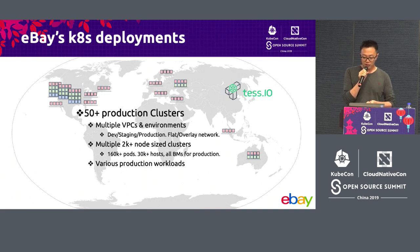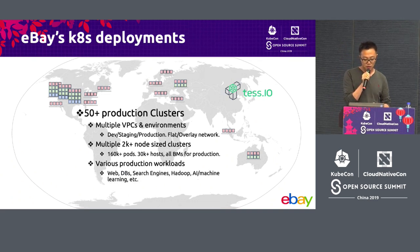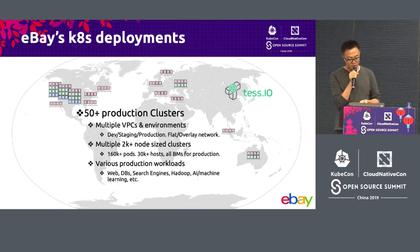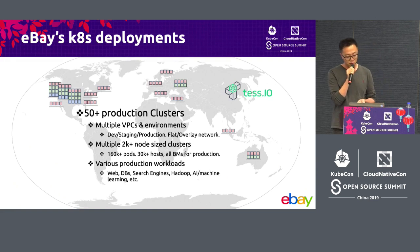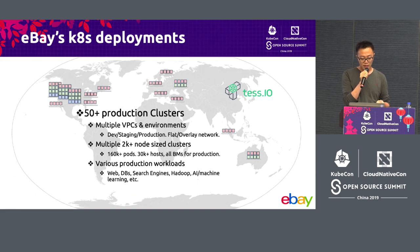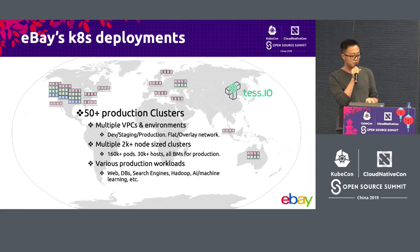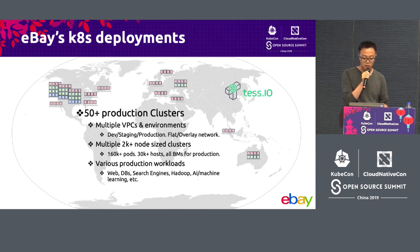Most of them are bare metals because we only run bare metals for production. We have so many different kinds of workloads running on Kubernetes now — web services, databases, search engines, Hadoop, AI, and machine learning as well. At the past European KubeCon I had a talk about our practices to run high performance workloads and our performance training. If you're interested you can always find the slides online and the presentation as well.